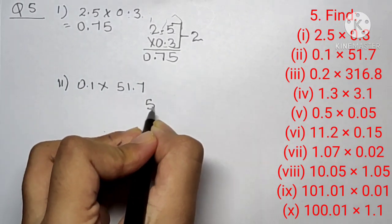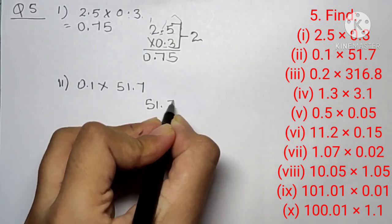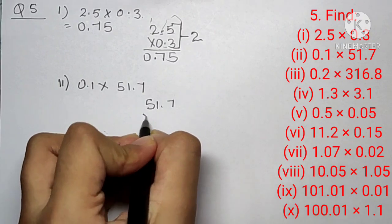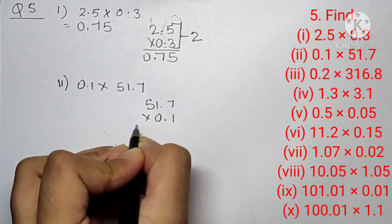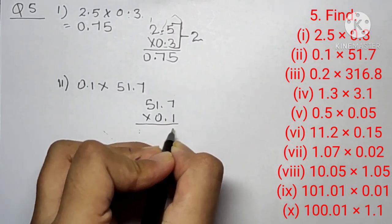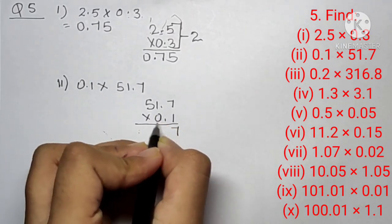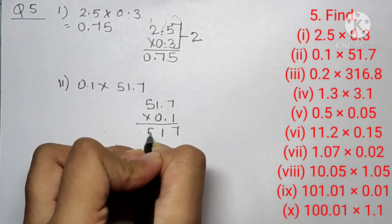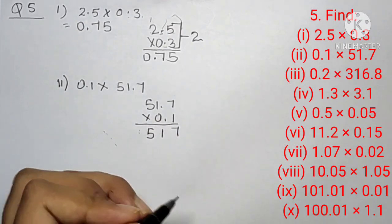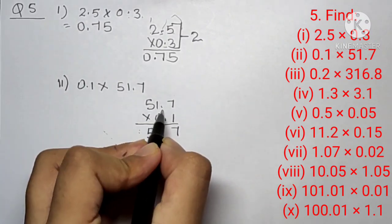Question number five, second part is 0.1 into 51.7. Let's multiply. 7 ones are 7, then 1, and 5, giving us 517.